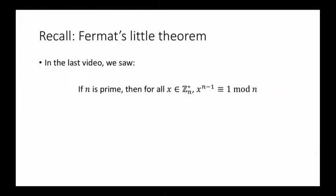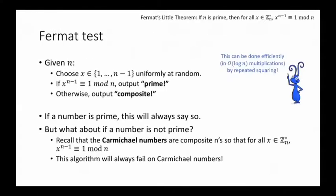The test that we're going to see now is based on Fermat's little theorem. Recall, in the last video about group theory, we saw Fermat's little theorem, which says that if n is prime, then for all x in Z_n*, x^(n-1) ≡ 1 mod n. This naturally leads to the idea of a test for prime numbers. Basically, we're going to choose some number x in 1 through n minus 1 uniformly at random. Then we're going to check, does x^(n-1) ≡ 1 mod n? If so, we're going to output prime. If indeed n is prime, this will always be correct, because Fermat's little theorem, which I've copied up here, says that that's always going to hold for any x you choose. On the other hand, if this does not hold for this particular random x, we're going to say composite.